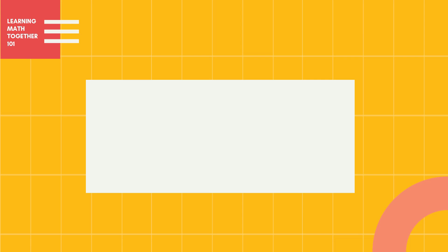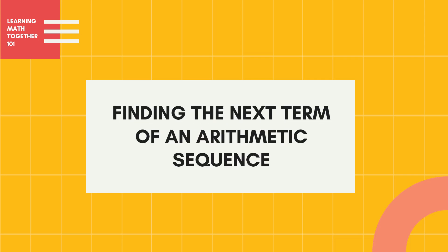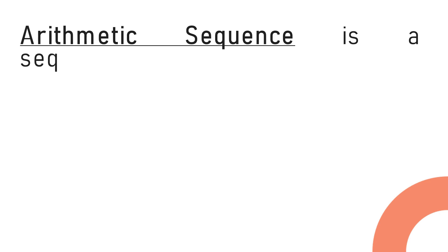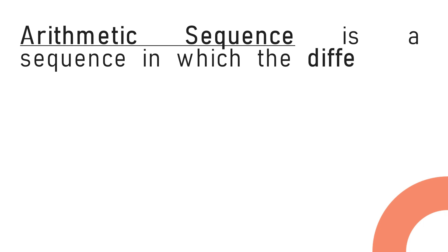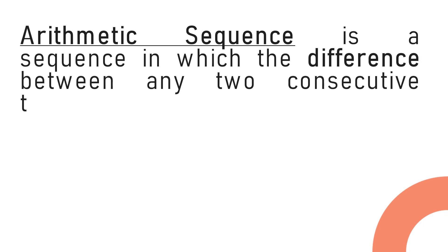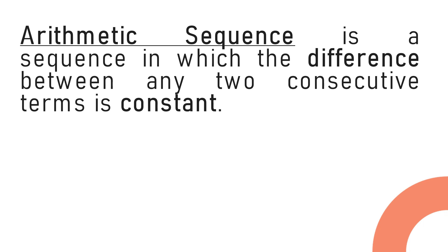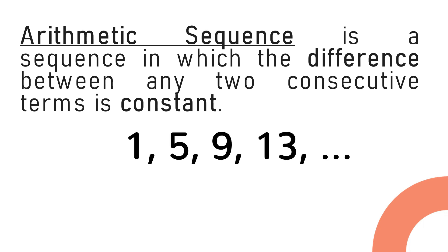Good day everyone. For today's video we'll be finding the next term of an arithmetic sequence. Let us first define arithmetic sequence. An arithmetic sequence is a sequence in which the difference between any two consecutive terms is constant. For example: 1, 5, 9, 13, and so on.